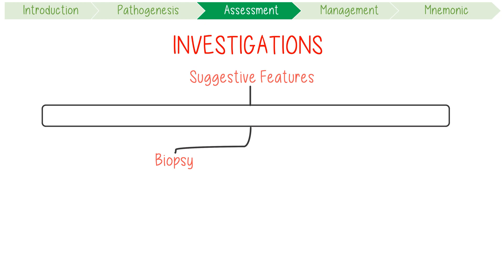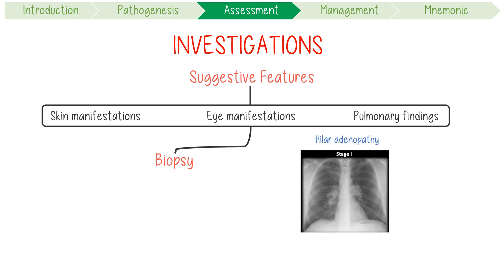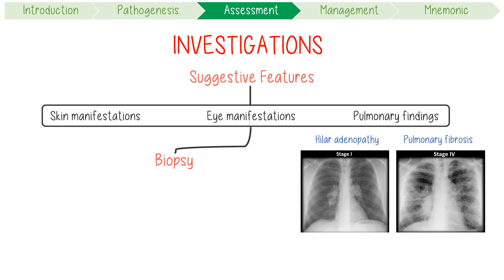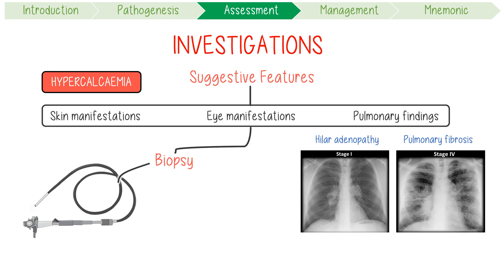If someone has specific features suggestive of sarcoidosis, you should consider biopsying the affected organ if possible. These features include consistent skin or eye manifestations, or suspicious pulmonary imaging findings. Pulmonary sarcoidosis is classified into four stages, from hilar adenopathy to end-stage pulmonary fibrosis. Another key suggestive finding is unexplained hypercalcemia, as granulomas produce vitamin D and ACE.